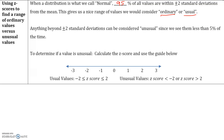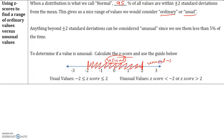To determine whether values are unusual, calculate the z-score and use the following guide. If the z-score is between negative 2 and positive 2, then the value is considered usual. Usual values fall within two standard deviations of the mean. If a data value has a z-score of more than 2, then it is unusual. Similarly, if a data value falls below two standard deviations of the mean — that is, a z-score less than negative 2 — it is also considered unusual.